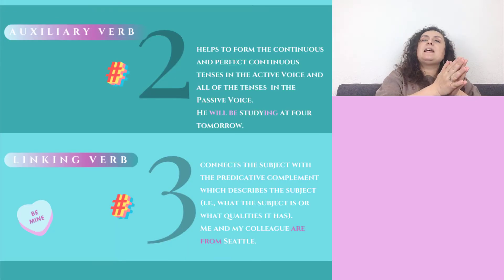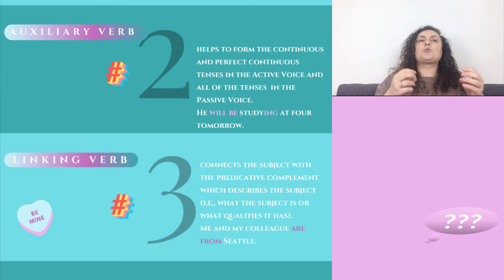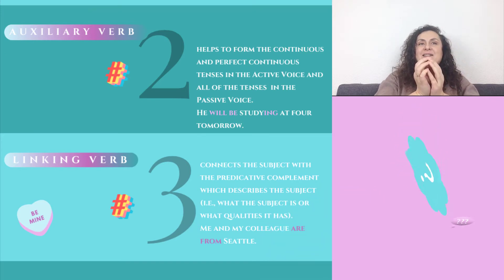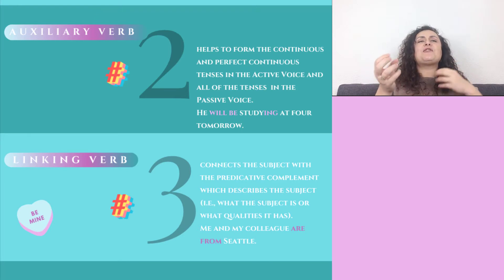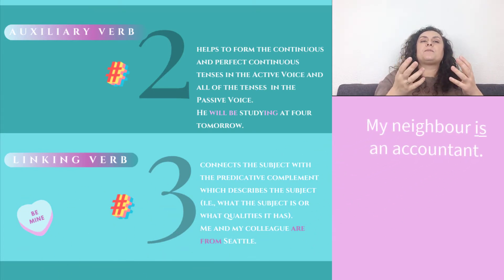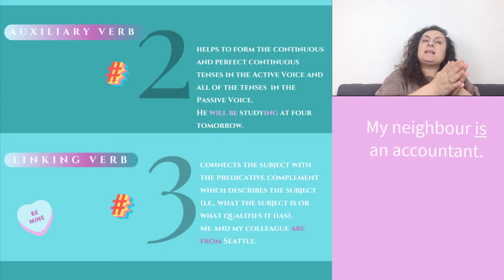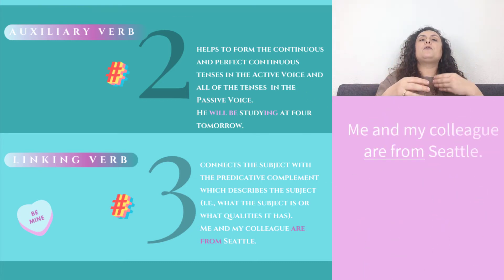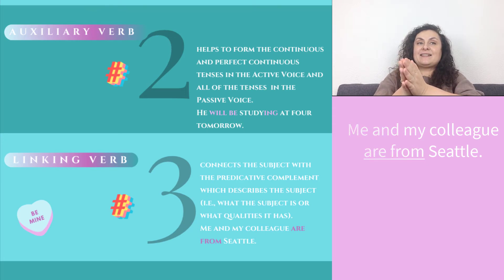Number 3: the verb be can be used as a linking verb, which connects the subject with a predicative complement describing the subject — what the subject is or what qualities it has. The linking verb to be may be followed by a noun, an adjective, a numeral, a pronoun, an infinitive, a gerund, and more. For example, with a noun: 'My neighbour is an accountant.' With an adjective: 'Business has been hectic recently' — hectic is an adjective. With a prepositional phrase: 'Me and my colleague are from Seattle.'